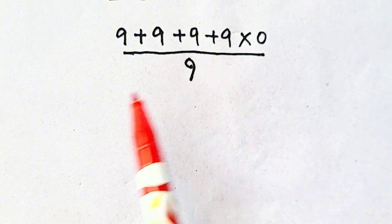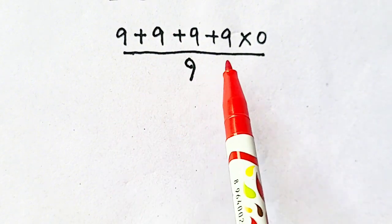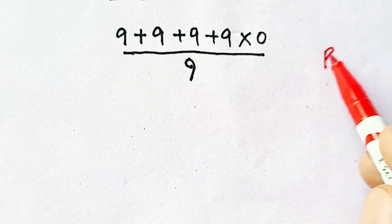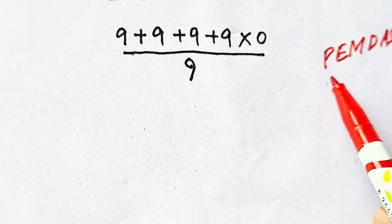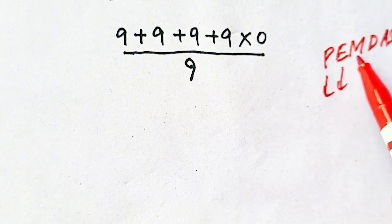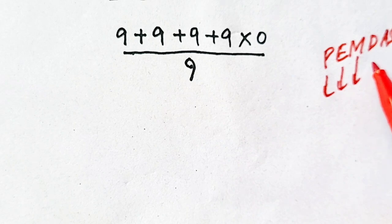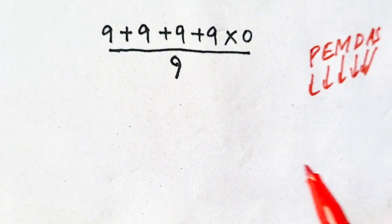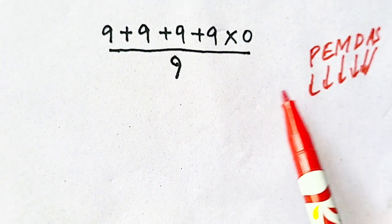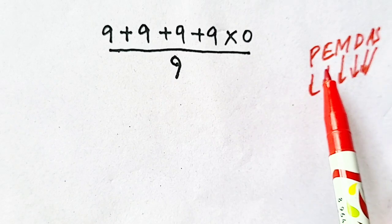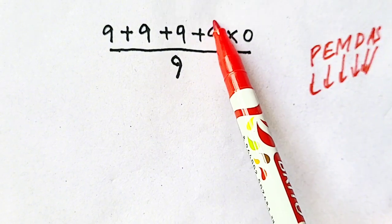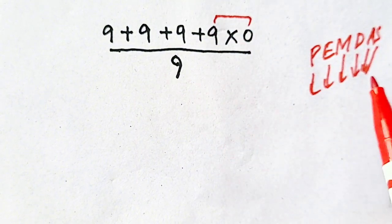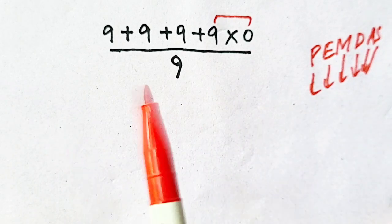Now, according to PEMDAS, we will follow the order of operations, which is: parentheses, then exponents, then multiplication, then division, and addition and subtraction. We have to solve multiplication first according to PEMDAS.